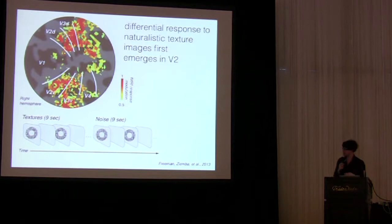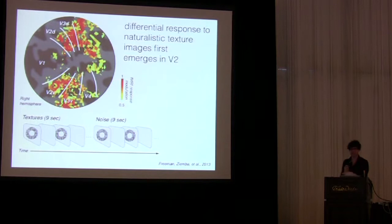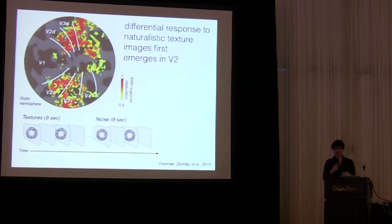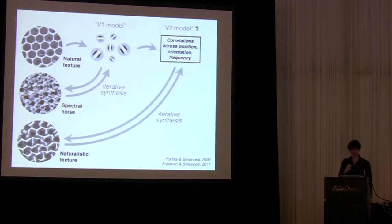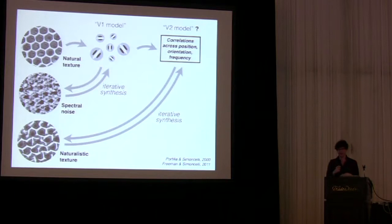And in a separate set of experiments that I don't have time to describe we've shown that these differential responses in terms of how they vary across different image categories are very highly related or tightly related to human's perception, psychophysically measured, of the same kinds of stimuli. So I think this work collectively has shown us that these higher-order correlational statistics, even if they don't explain what V2 is doing, which I don't think they quite do yet, they provide us a very good hint about what might be computed.